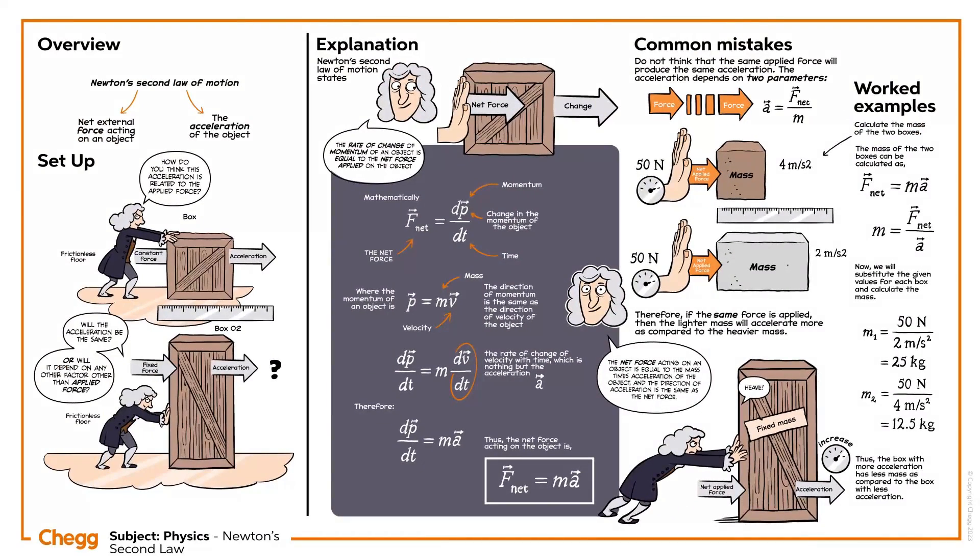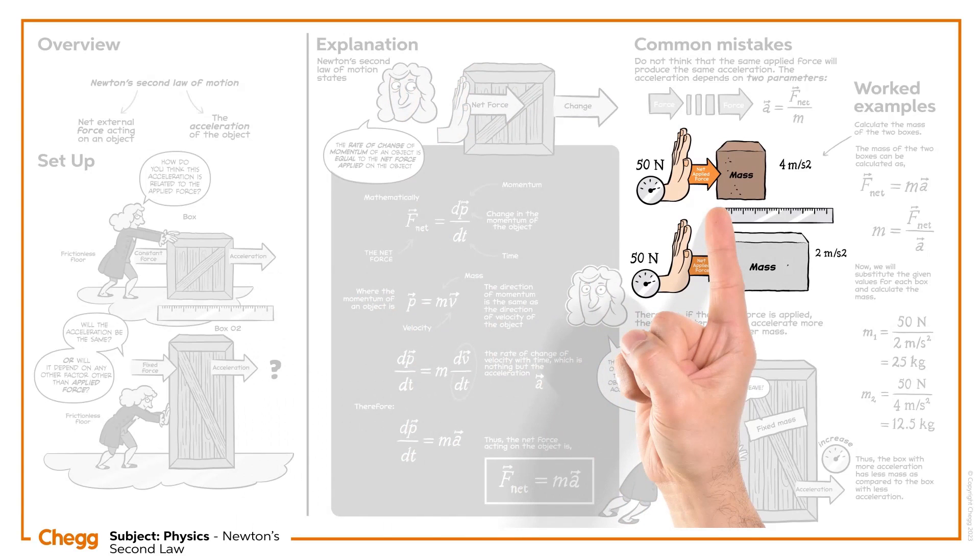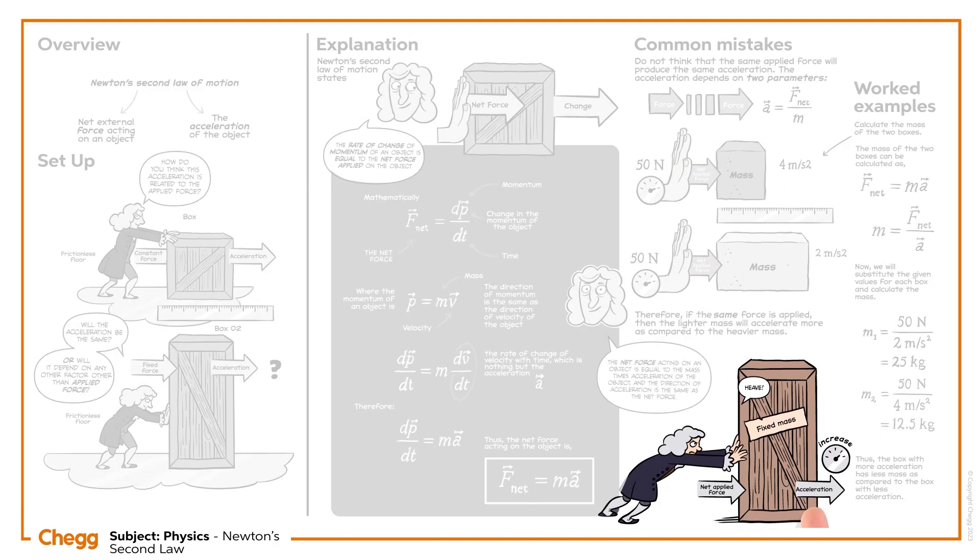Let's summarize what we have learned so far. Newton's second law of motion relates the net applied force to the acceleration of an object. The net force acting on an object is equal to the product of its mass and acceleration and the direction of acceleration is the same as the applied force.